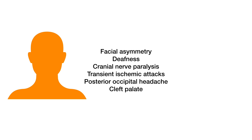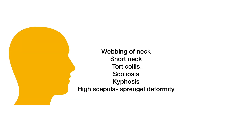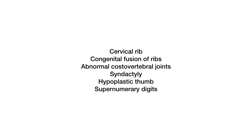Other findings include cleft palate, webbing of the neck, short neck, torticollis, scoliosis, kyphosis, and Sprengel's deformity, which is characterized by a high scapula. Musculoskeletal abnormalities can include cervical ribs and congenital fusion of ribs.